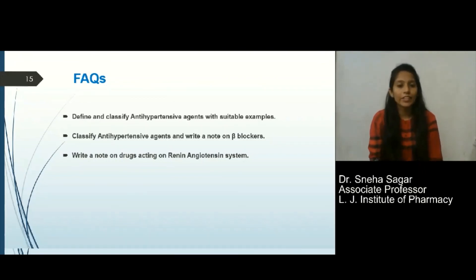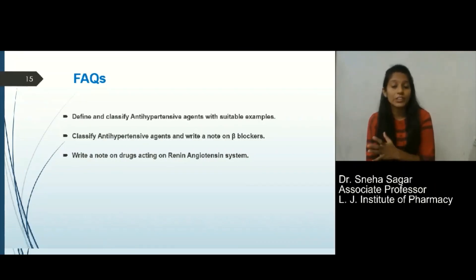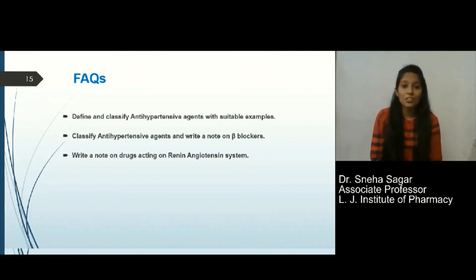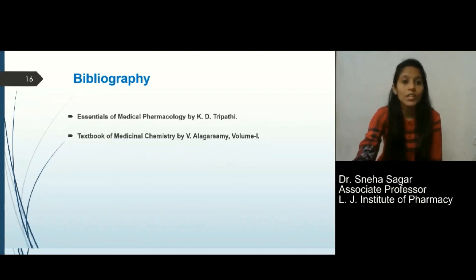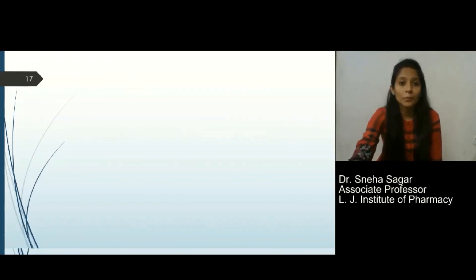Frequently asked questions for GTU examination include: define and classify antihypertensive agents with suitable examples; write a note on antihypertensive agents with special focus on beta blockers; and write about drugs acting on the renin-angiotensin system. These books listed in the bibliography can be referred to for your preparation.